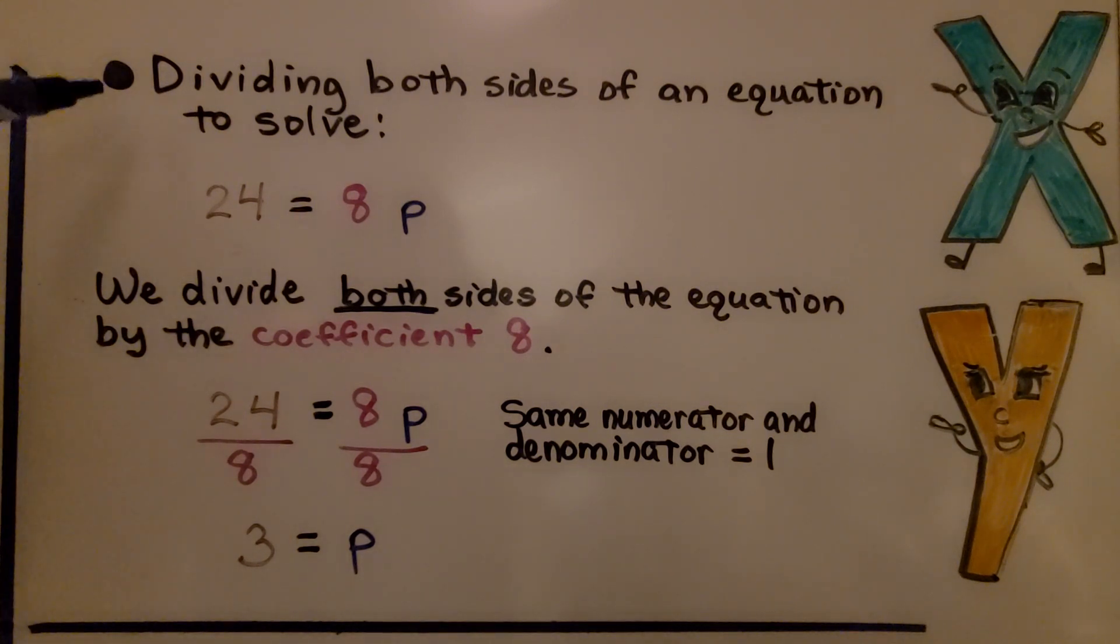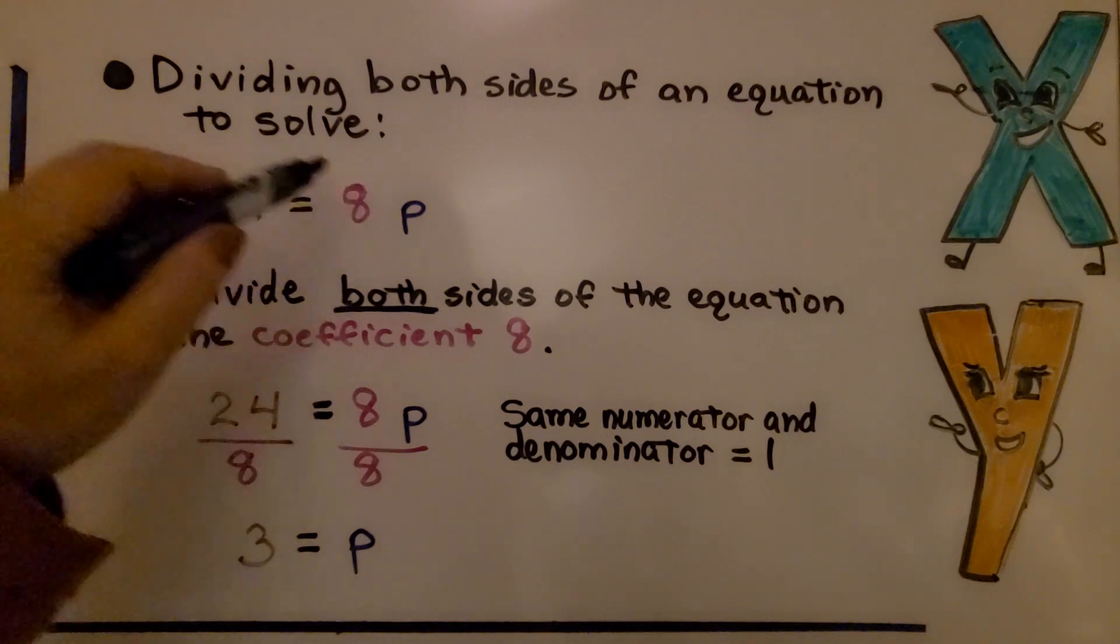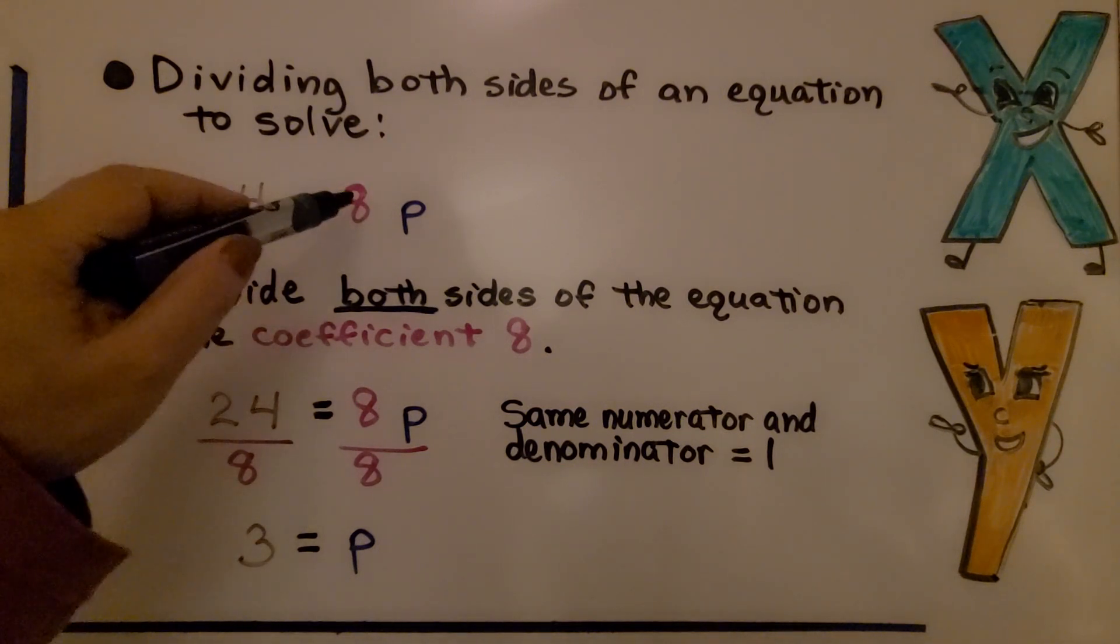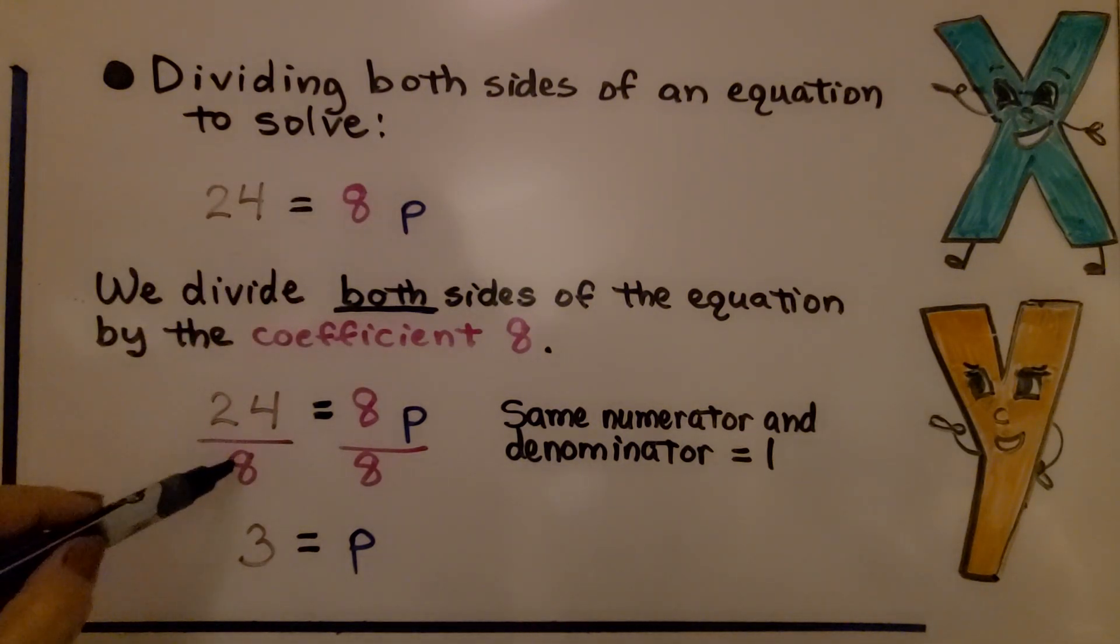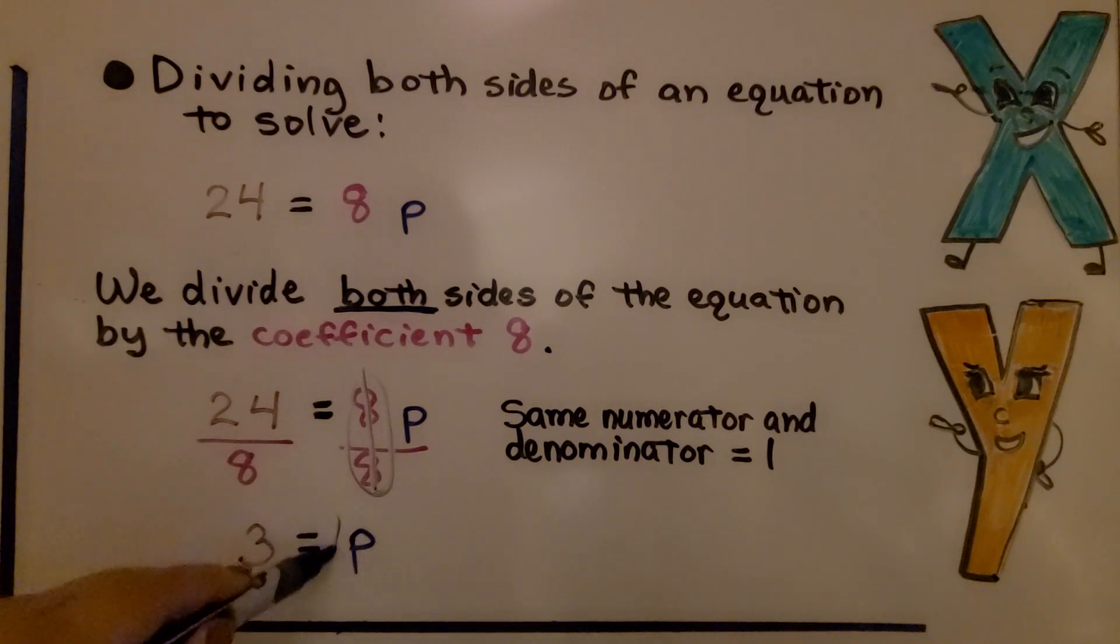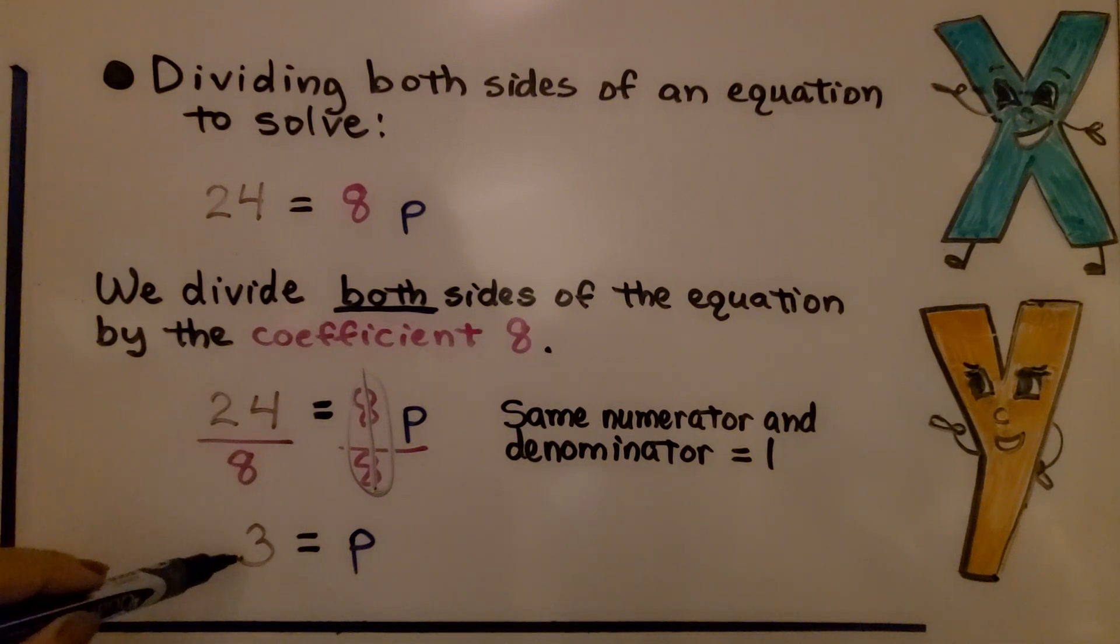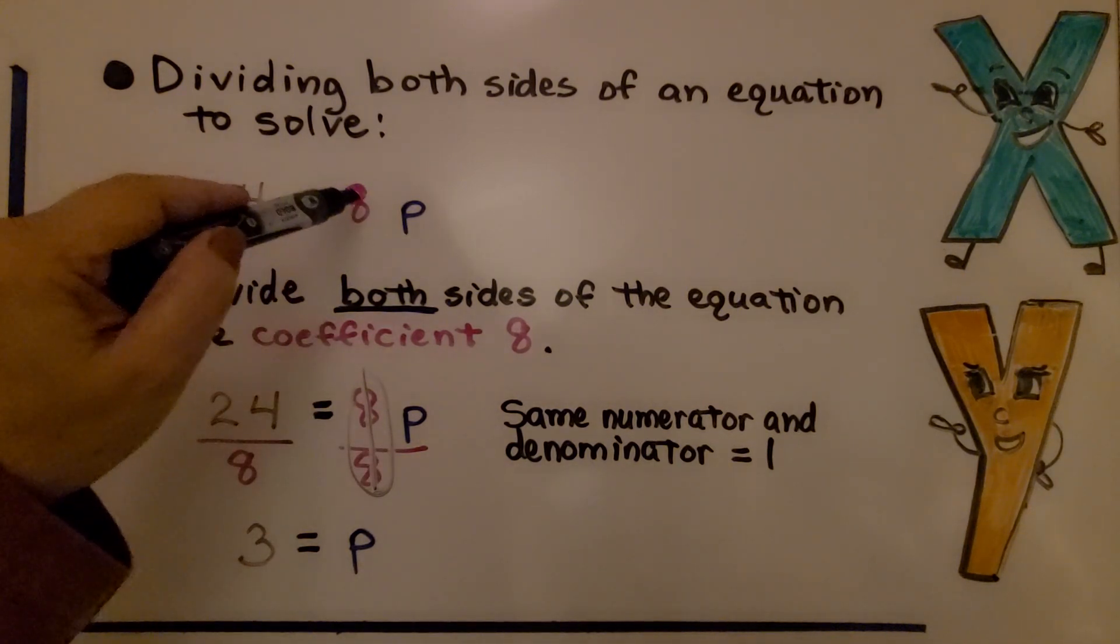Now let me show you this real quick. This is dividing both sides of an equation to solve. If we had 24 is equal to 8P, we divide both sides of the equation by this coefficient 8. Remember, a coefficient is the number just to the left of a variable. We divide this side by 8 and this side by 8. We end up with the same numerator and denominator, which is a giant 1, isn't it? So we have 1P, but we don't have to write the 1 when it's just 1. We get 24 divided by 8 is 3, and we get P, 1P on this side. We know that 3 is equal to P. We were able to solve for P to find the value of P by dividing both sides by this coefficient 8.